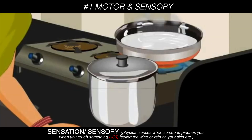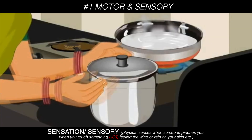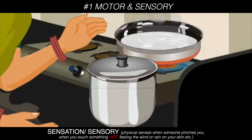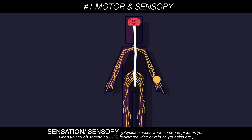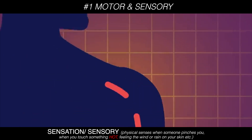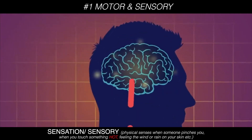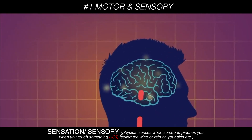In the same way, if you touch a hot pan, the skin nerves sense the heat, which sends a signal up to the brain, allowing you to move your hand away before you burn yourself. This is called sensation or sensory function.